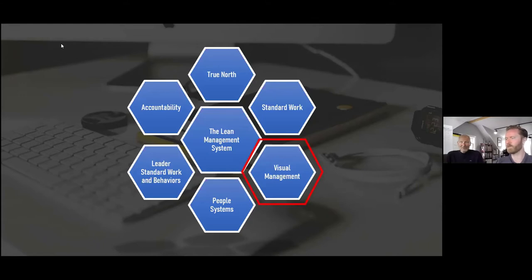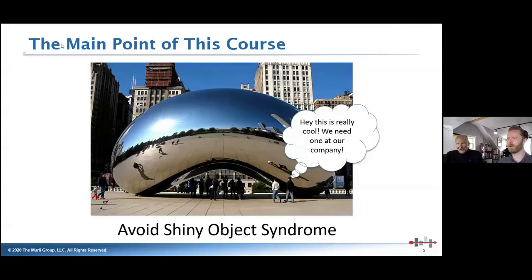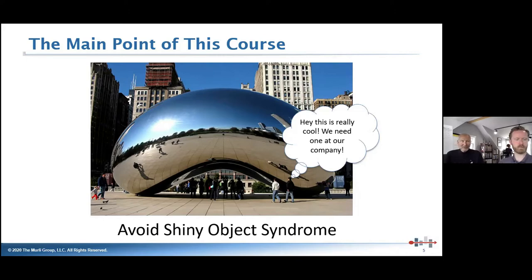Visual management is what we're here to focus on today. The key point of this class is embodied in this image. One of the problems — along with one of the blessings — of visual management is that it's intuitive. It strikes you when you see a good visual management tool. The problem becomes one of shiny object syndrome.